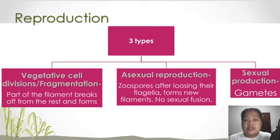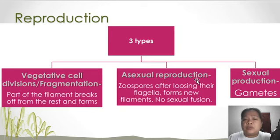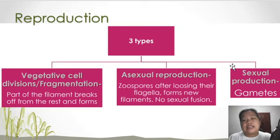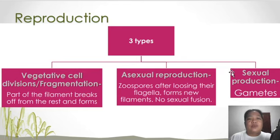In terms of reproduction, there are three types. We have vegetative cell division by fragmentation, in which a part of the filament breaks to form another individual. We have also asexual reproduction, where the zoospores, after losing their flagella, form new filaments with no sexual fusion. And lastly, we have sexual reproduction, which is the fusion of gametes — the male and female gametes fuse into one zygote, then develop into a new individual.